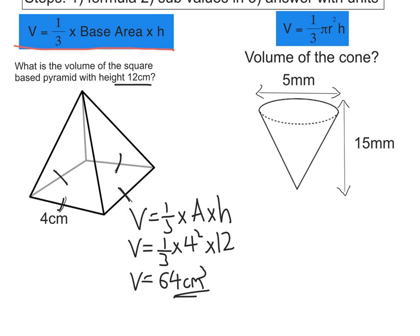Now in terms of the second question, the cone. The formula for a cone is a third pi r squared H. So I'd write that out, a third pi r squared H.